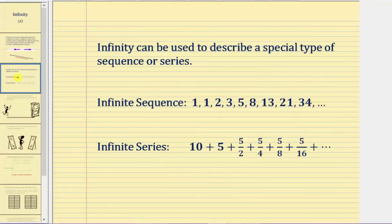Infinity can also be used to describe a special type of sequence or series, where a sequence is a list of terms, and an infinite sequence would be a sequence that is endless or limitless. Notice on the far right we have comma dot dot dot, which means this sequence is endless or limitless, meaning the terms continue forever, and therefore we can say it's an infinite sequence.